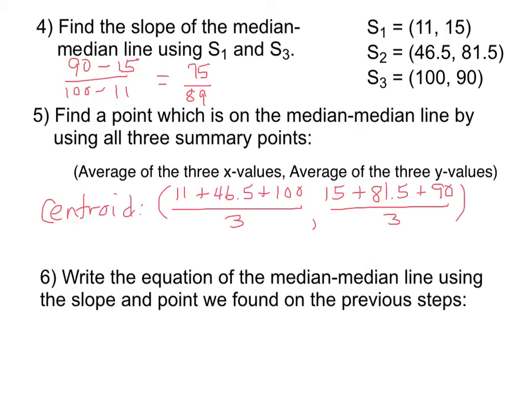I went to my calculator to find out what this ordered pair simplified to, and the average of the three x's came out to be 52.5.